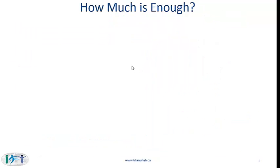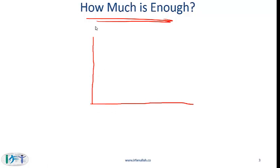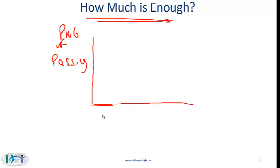I'll now respond to a question that keeps coming up: how much study is enough, how much practice is enough. I'm going to explain this through a graph. On the y-axis we have the probability of passing and on the x-axis the amount of study. If you simply read the curriculum or study notes or listen to our videos and don't do any practice — I'll call that the review area — the probability of passing is approximately 20%. Then as you start practicing, your probability of passing keeps increasing.